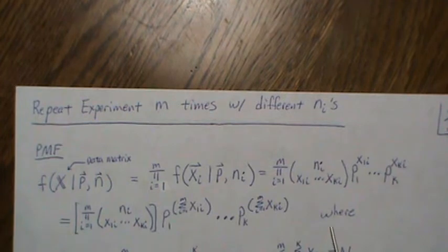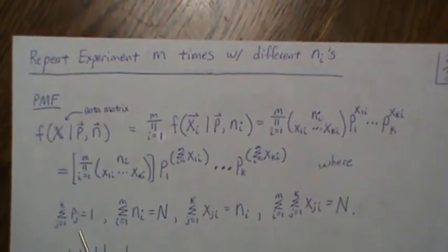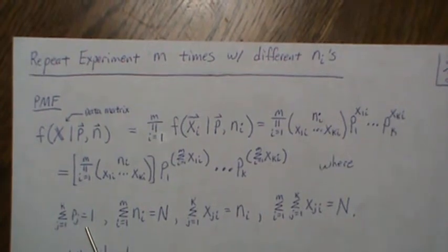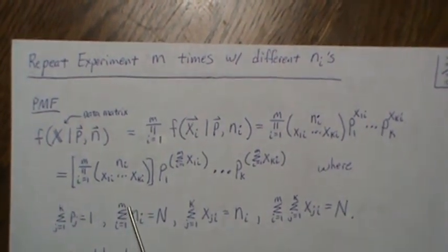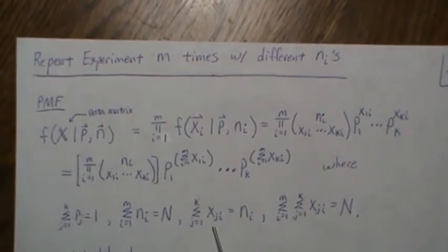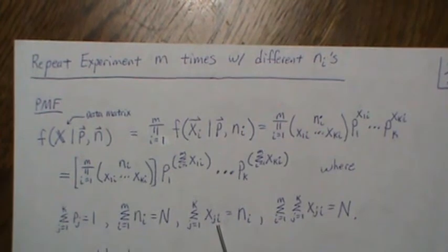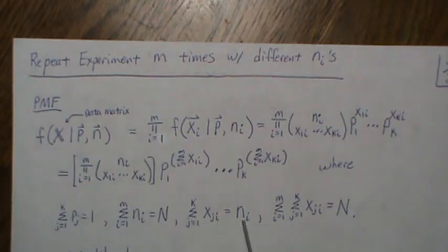Now there's the conditions here are this, where of course the p's sum to 1. The n's for each of the m experiments sum to 1 within an experiment. So within the ith experiment the xj's sum to ni, and if you double sum it then let's just call that n capital N.